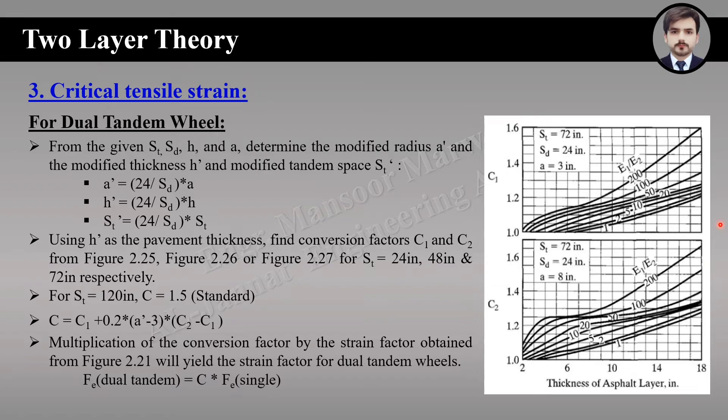The remaining process is the same: find a strain factor for single wheel and multiply it by conversion factor C to get the strain factor for dual tandem.